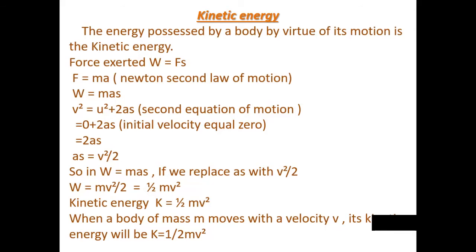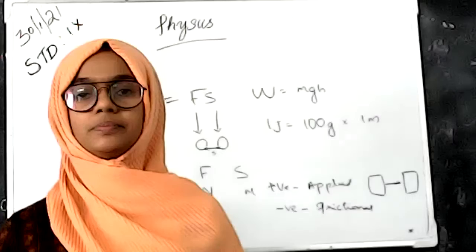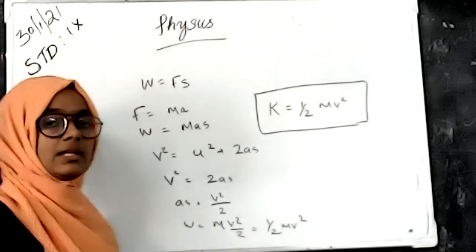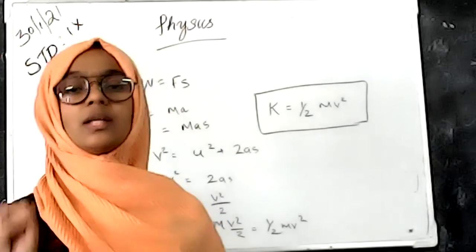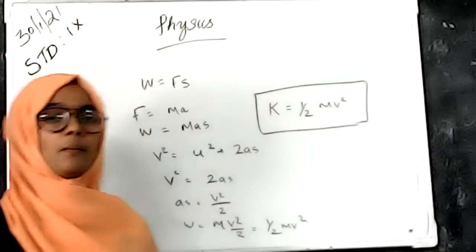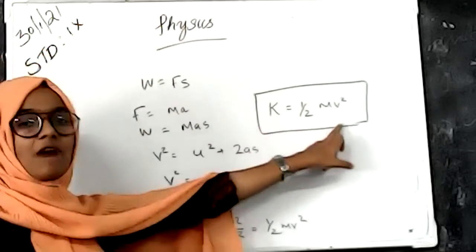When a body of mass m moves with linear velocity v, its kinetic energy is KE = ½mv². The energy in motion is known as kinetic energy, and the equation for kinetic energy is KE = ½mv².